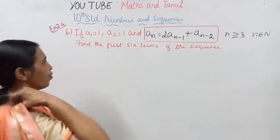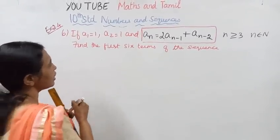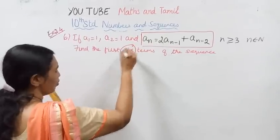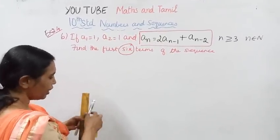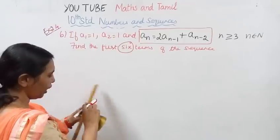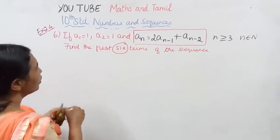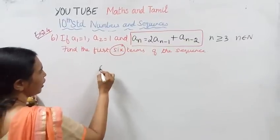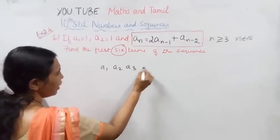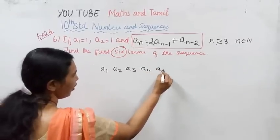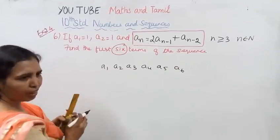Find the first 6 terms. We need to find 6 terms — that means we need to find A1, A2, A3, A4, A5, A6.